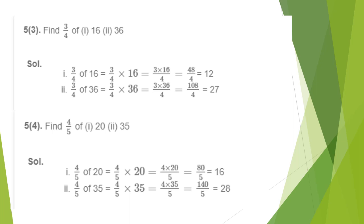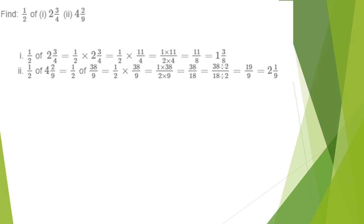Our next question: find 1/2 of 2¾. Converting 'of' to multiplication, and converting the mixed fraction 2¾ into an improper fraction 11/4, we get 1/2 × 11/4. Multiplying numerators over denominators gives 11/8. There is no common factor between numerator and denominator, and it is an improper fraction, so we convert to a mixed fraction. The answer is 1 and 3/8.